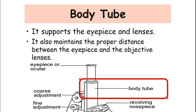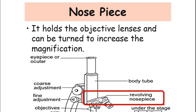Next is the body tube. The body tube holds the eyepiece to the revolving nosepiece and also maintains the proper distance between the eyepiece and the objective lenses. Next is the revolving nosepiece. The revolving nosepiece holds the objective lenses and can be turned to increase the magnification of the image.